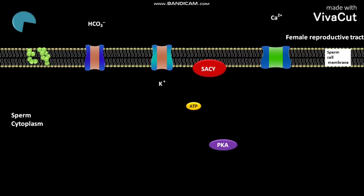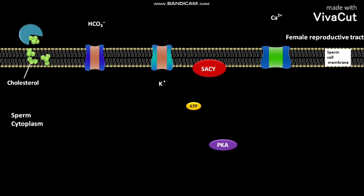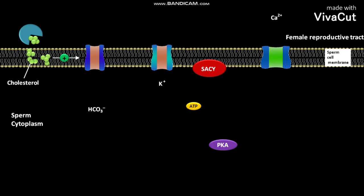The sperm cell membrane contains cholesterol. In the female reproductive tract, egg albumin protein is present. The egg albumin protein binds to the cholesterol and removes it from the sperm cell membrane. The removal of cholesterol from the sperm cell membrane by egg albumin protein allows the influx of bicarbonate ions into the sperm cytoplasm through a bicarbonate channel.